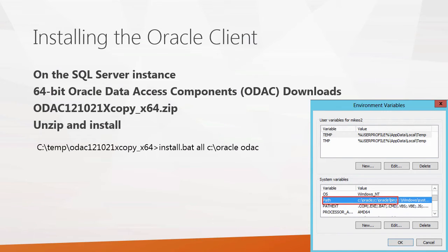So how do you install your Oracle client? There are a number of different Oracle clients out there, but probably one of the simplest to use is the 64-bit data access components. You would go to Oracle.com and download the file — it's called ODAC121021XCopy_x64. There's also a 32-bit version, but most of you are likely using 64-bit servers.